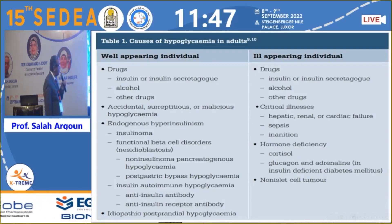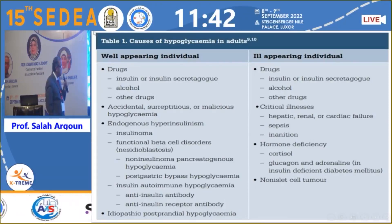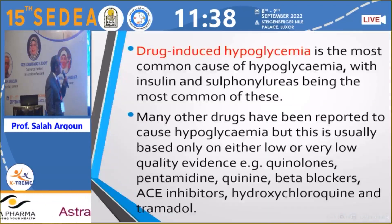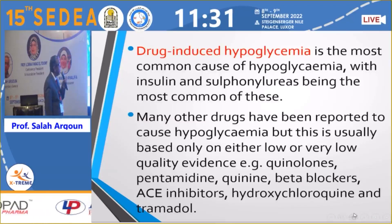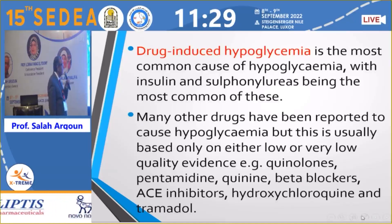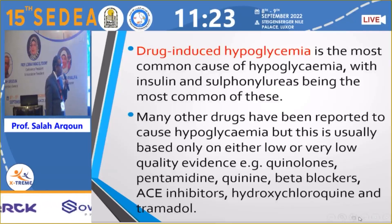Endogenous hyperinsulinism also includes insulin autoimmune hypoglycemia, involving anti-insulin antibody or anti-insulin receptor antibody. The drugs associated with hypoglycemia include quinolones, pentamidine, quinine, beta blockers, ACE inhibitors, hydroxychloroquine, and tramadol.